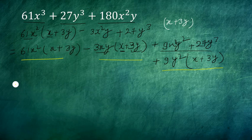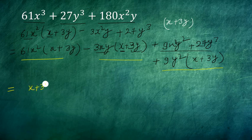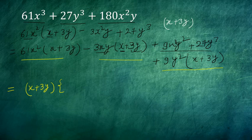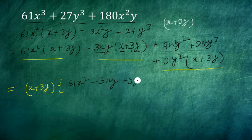We can take this term out. Taking x + 3y out, the remaining quantity is 61x² - 3xy + 9y². After this, the factorization is complete.